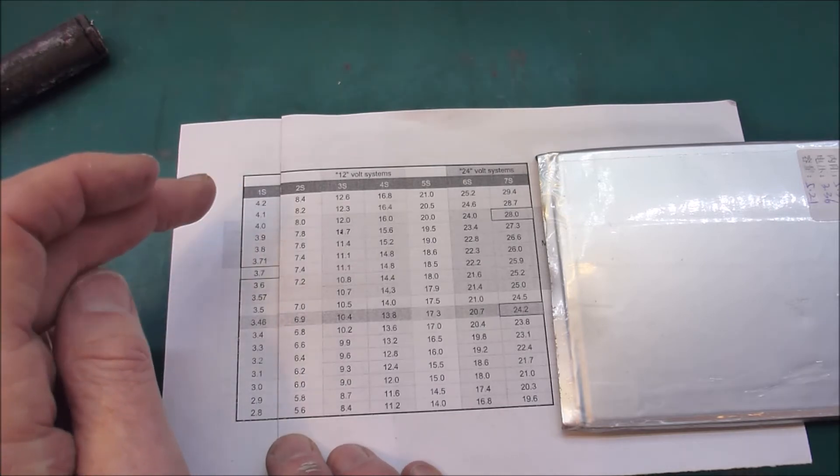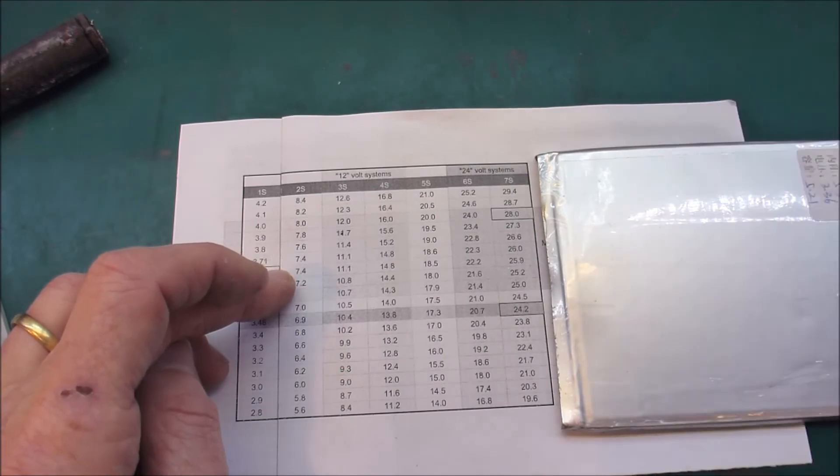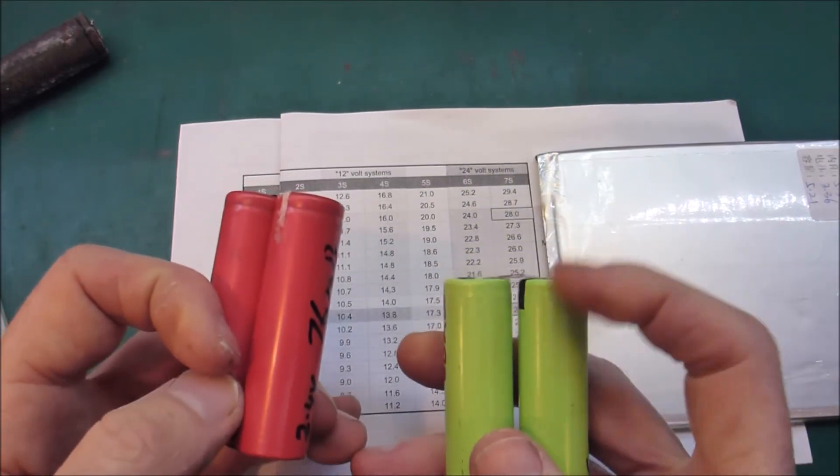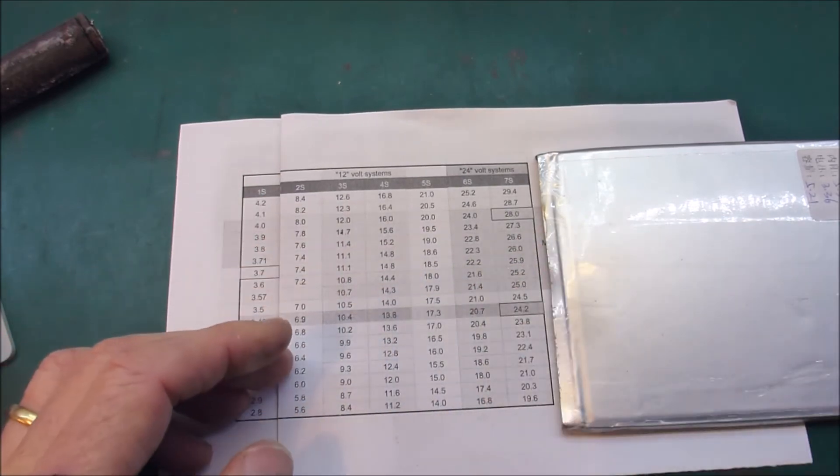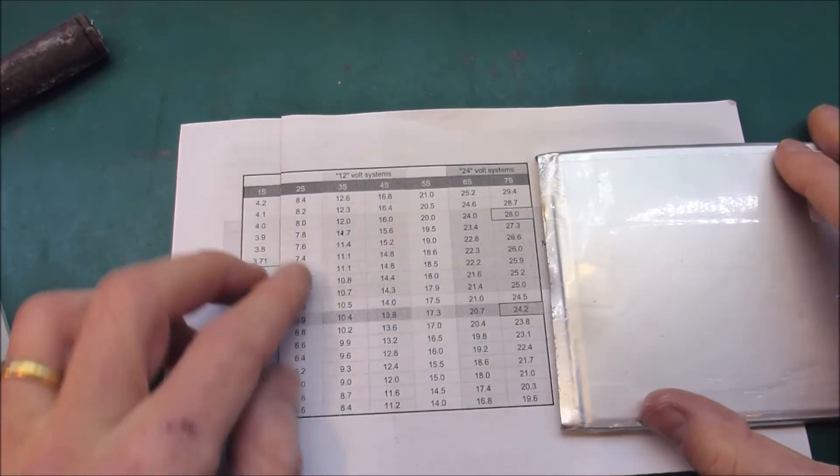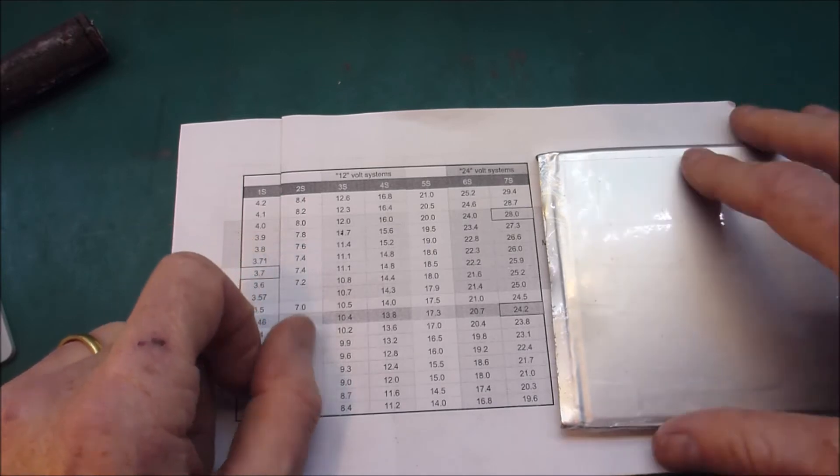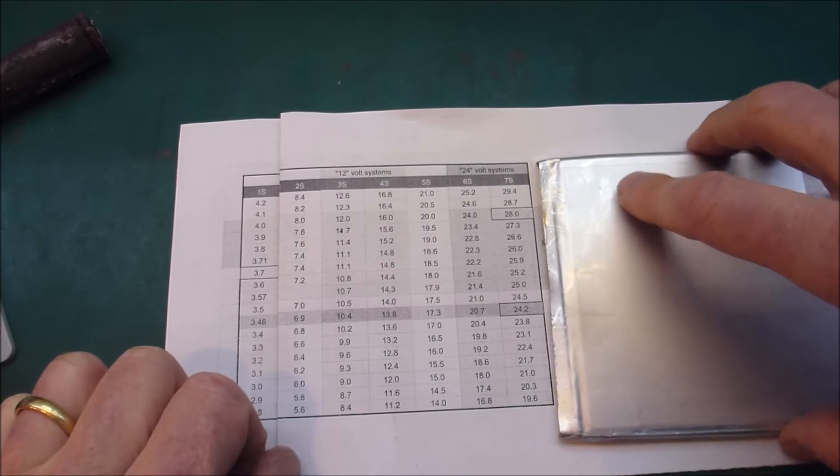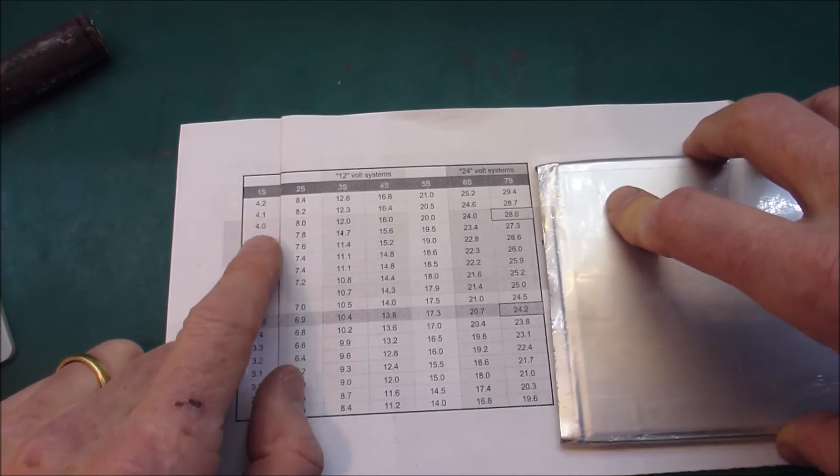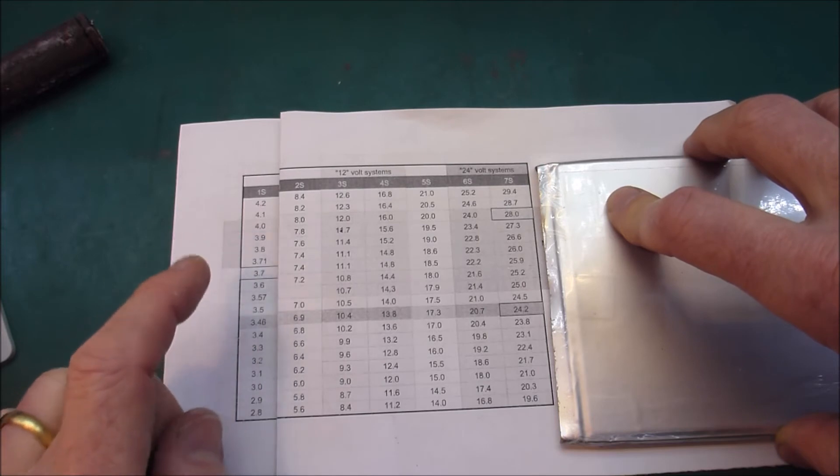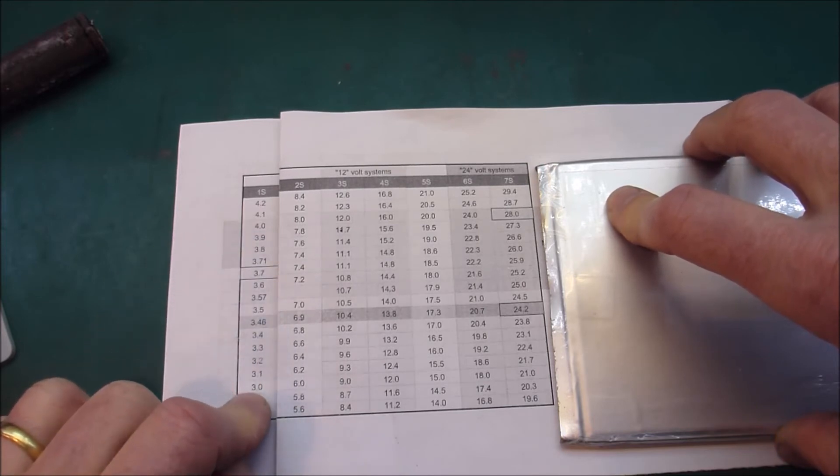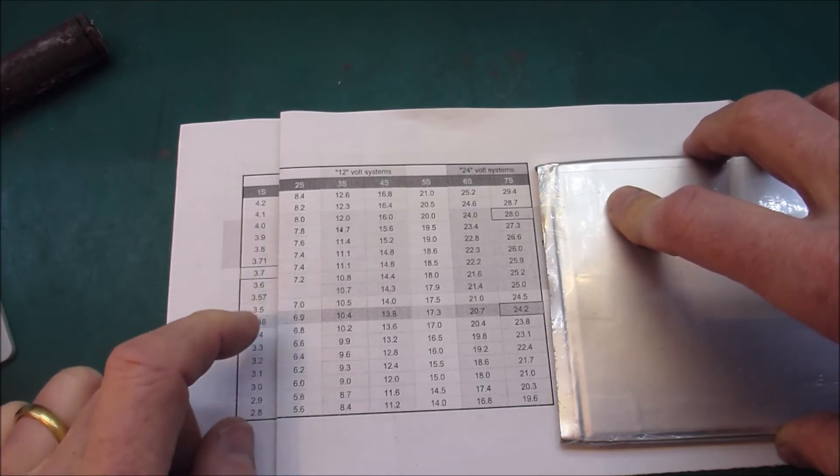So there are some products out there which when the display says full they're actually only 80% full. Which is quite clever. However, the complication that we have of course is we've got all sorts of different cells with potentially different chemistries and different discharge profiles. So it can be quite hard to work out where that 80% mark is. If you look out on the internet there are a few places where they'll say 4V equals 80% and 3V equals flat and a few other numbers in between.